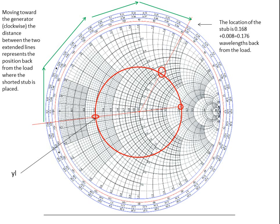The location of the stub is 0.168 plus 0.008, which equals 0.176 wavelengths back from the load. The 0.168 comes from reading the outside of the Smith chart, but note that we started before our starting point of zero, so we have to add that small stretch, which is 0.008 of a wavelength. That gives us a position of 0.176 wavelengths back. Later we'll calculate the exact physical length based on our guide wavelength.